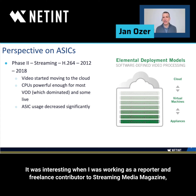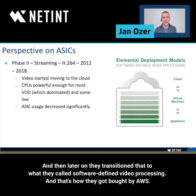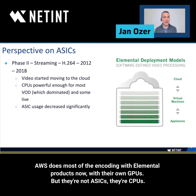It was interesting when I was working as a freelance contributor to Streaming Media Magazine. Elemental came out, and in 2012, 2013, they really hyped the fact that they had compression-centric hardware appliances that produced encoding. And then later on, they transitioned that to what they called software-defined video processing. And that's how they got bought by AWS. AWS does most of the encoding with Elemental products now with their own CPUs, not ASICs.